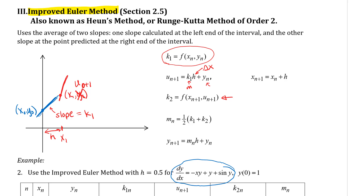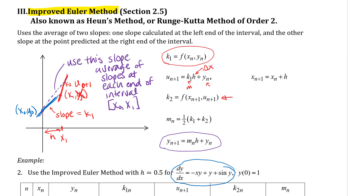Rather than using that second point as just what we're going to use to get our next line segment, we use it to get a u value, and then the next k — k2 — is the slope at that predicted point. So we have a slope at the predicted point, and what we're actually going to use in our prediction formula is m for slope, which is the average of those two slopes. That average slope is what I would use to get my actual y1 value and my next point x1, y1.